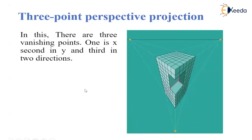Three-point perspective projection means we have three vanishing points: one, two, and three. In three-point perspective projection, we can see this side, this side, and the top view as well. In this way, we can view the different sides of the object. This is all about projections — parallel projection and perspective projection and their different types.